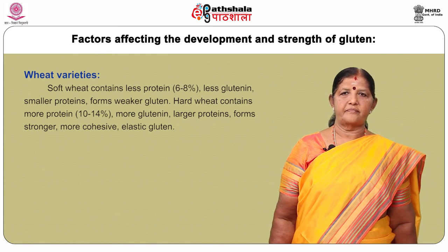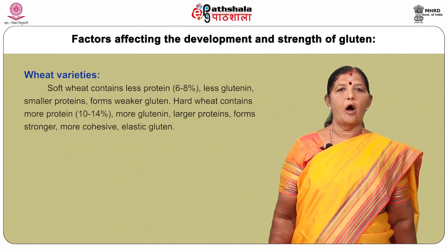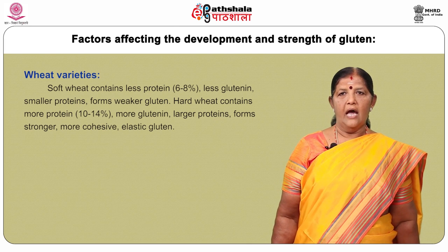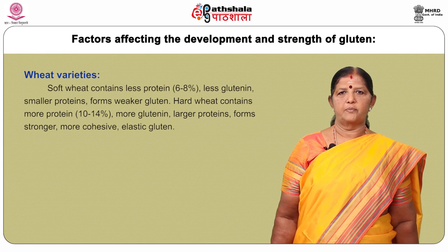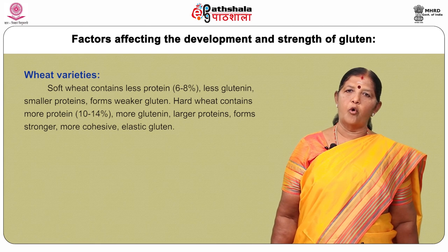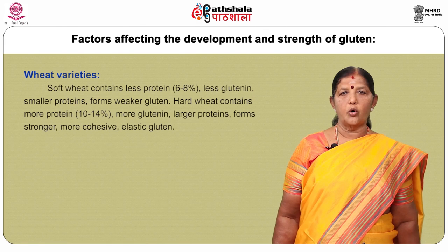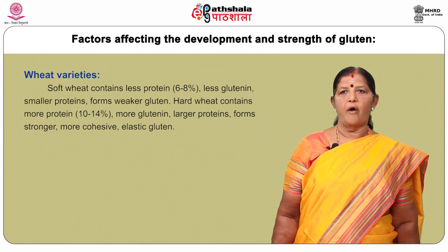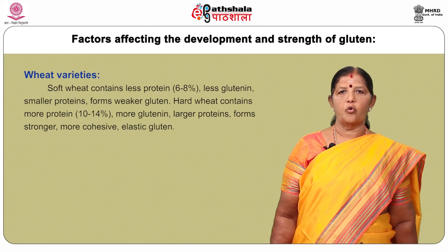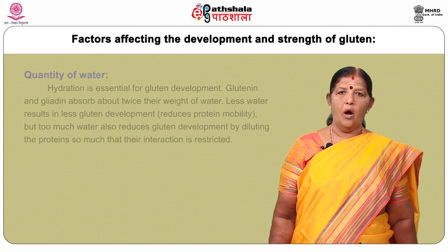Wheat varieties: Soft wheat contains less protein, about 6–8%, and forms weaker gluten. Hard wheat contains more protein, about 10–14%, and forms stronger, more cohesive elastic gluten.